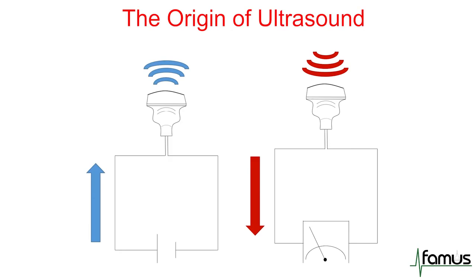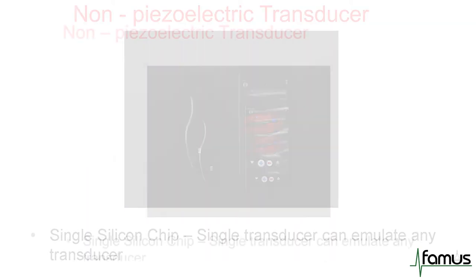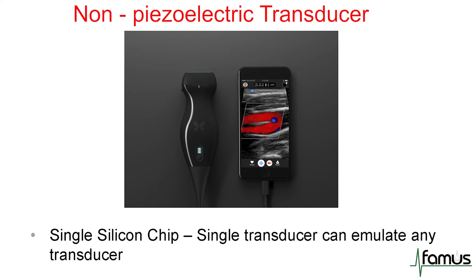The next slide shows how ultrasound waves are generated. We have a piezoelectric element, or crystal, on top of our transducers, and if we put electricity — a current — onto these crystals, ultrasound waves are generated. Once the ultrasound waves are reflected and coming back to our crystal, a voltage is generated which the machine can measure. There are now newer technologies using non-piezoelectric transducers; for instance, a device with a single silicon chip where one transducer can emulate any point-of-care ultrasound transducer.